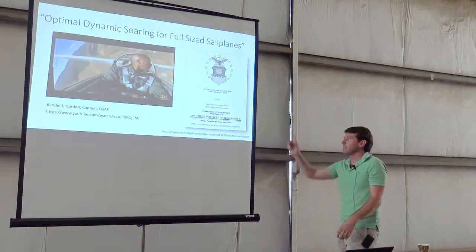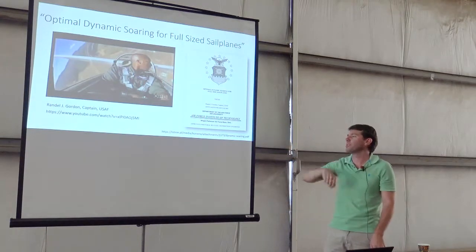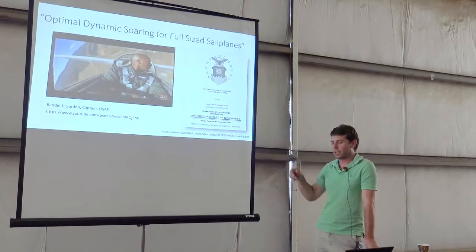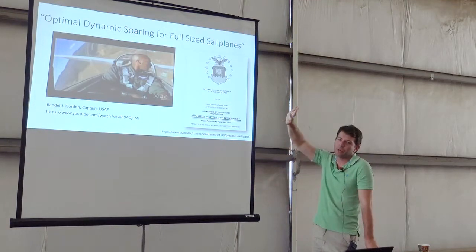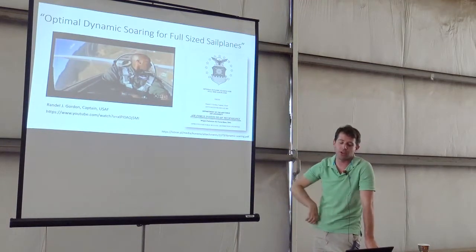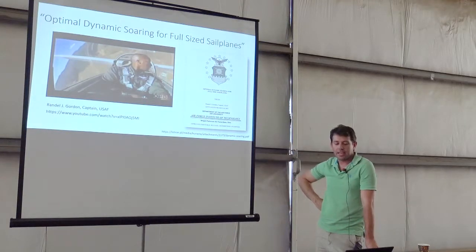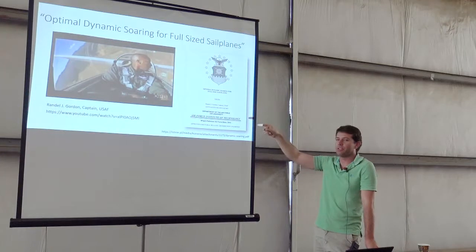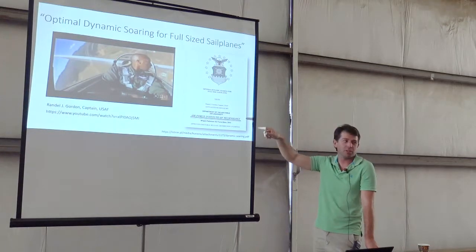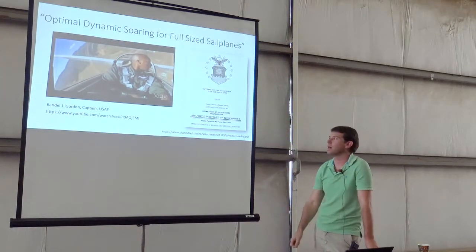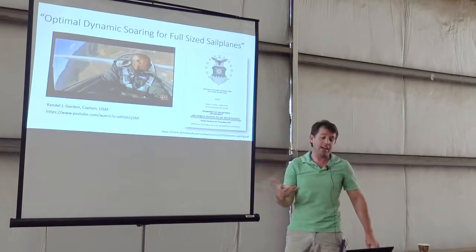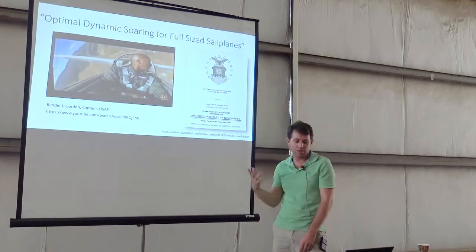So the answer is, when they flew in the Blanik L-13, they demonstrated that by using what they call the hairpin maneuver, which is the upwind climb and the downwind turn, yes, they could extract energy out of the atmosphere. But in a Blanik L-13, it wasn't feasible because it has a really crappy L over D. So not the right glider, but in a man-sized glider, they actually demonstrated that you could use dynamic soaring.